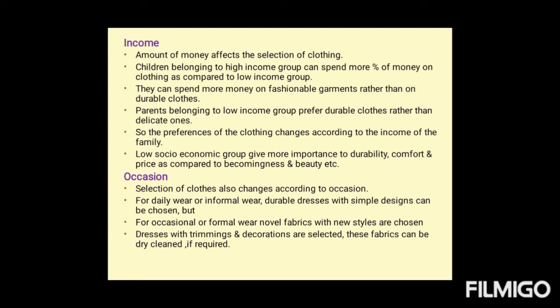High income groups can spend more on fashionable garments rather than durable clothes. Parents from low income groups prefer durable clothes rather than delicate ones. The preferences in clothing change according to the income of the family. Low socioeconomic groups give more importance to durability, comfort, and price compared to becomingness and beauty. Occasion: for daily wear or informal wear, durable dresses with simple designs can be chosen, but for occasional or formal wear, novel fabrics with new styles and decorative trimmings are selected. These fabrics can be dry cleaned if required.